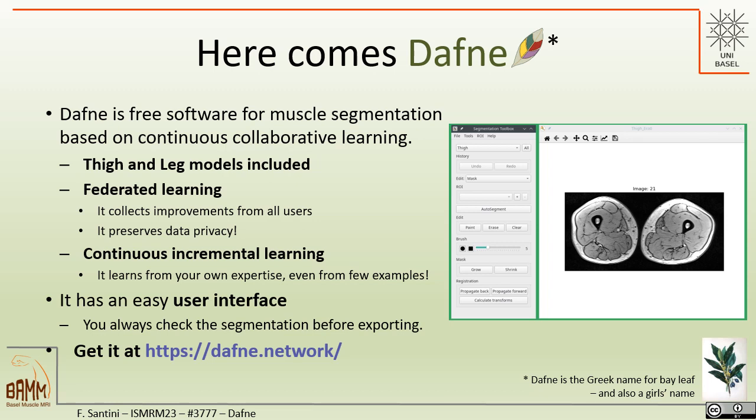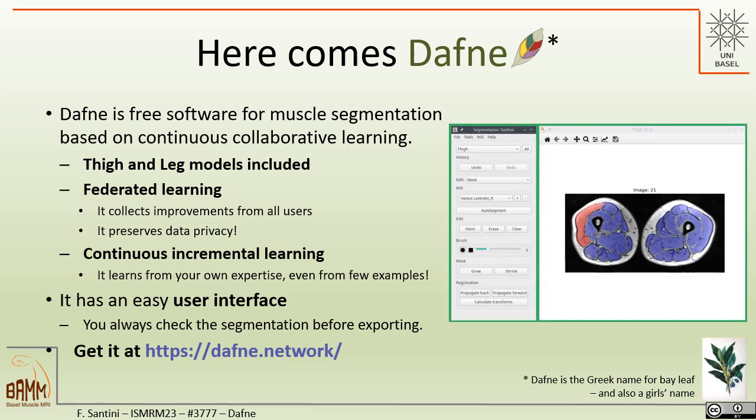This is how our free software Daphne works. You can get Daphne at the website daphne.network. It offers a very nice interface for segmentation, which includes models for the automatic segmentation of the thigh and of the leg. In Daphne, you refine the segmentation proposed by the models, and then it takes care of improving the model and sending it back to the server so that your data privacy is preserved and you can continuously improve the model.